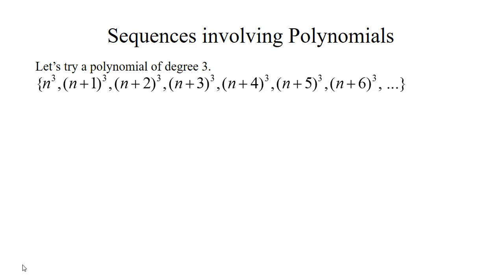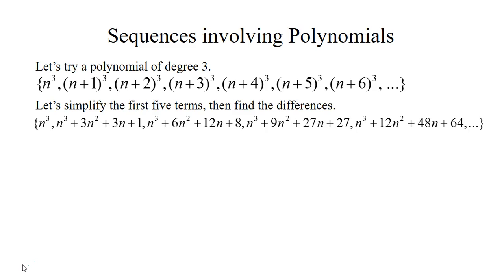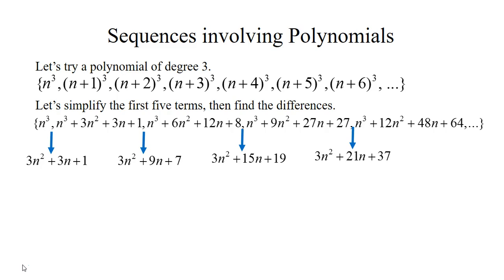Let's try a polynomial of degree 3. We simplify the first five terms: n cubed; n plus 1 cubed is n cubed plus 3n squared plus 3n plus 1; and we expand n plus 2, n plus 3, and n plus 4 cubed similarly. Subtracting consecutive terms once gives 3n squared plus 3n plus 1, then 3n squared plus 9n plus 7, and so on. Subtracting a second time cancels the n squared terms. Subtracting a third time leaves just 6. Because we needed three subtractions to reach a common difference, this is a third-degree polynomial — in this case n cubed.